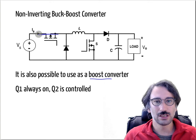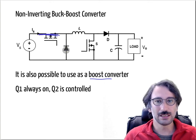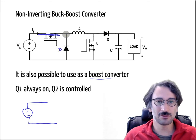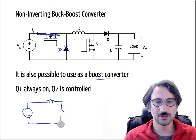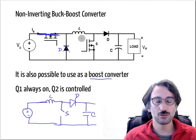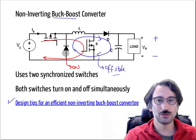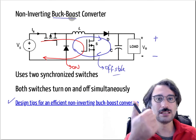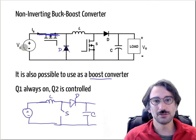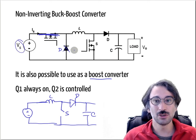You can also operate it as a boost converter. By turning Q1 on completely and controlling Q2, you have the same circuit as a boost converter. So that topology is not only a non-inverting buck-boost converter — it can operate as a buck converter, a boost converter, or a buck-boost converter, giving you more flexibility depending on your input and output voltage range.